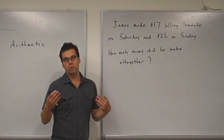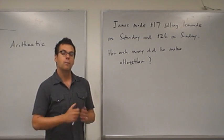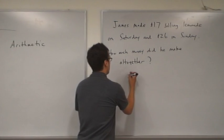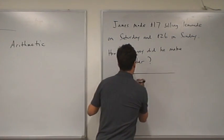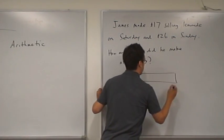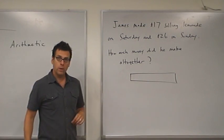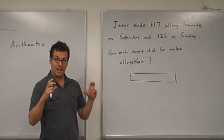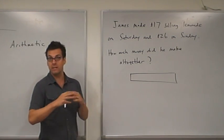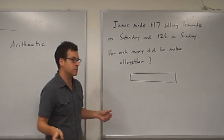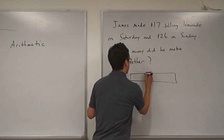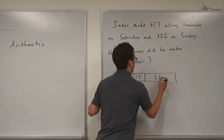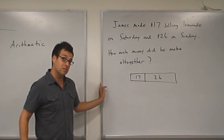However, suppose a student can't do that. Hopefully, a student will be able to draw a diagram that reflects this situation. As we did when we talked about addition originally, we can illustrate what's happening here with a bar that represents the total amount of money that he earned, and we can split it into the $17 that he earned on Saturday and the $26 that he earned on Sunday.